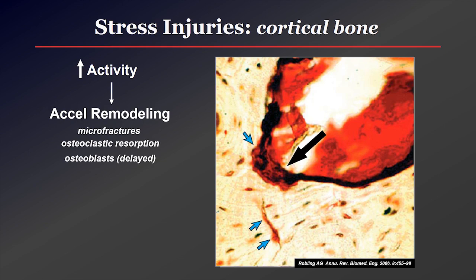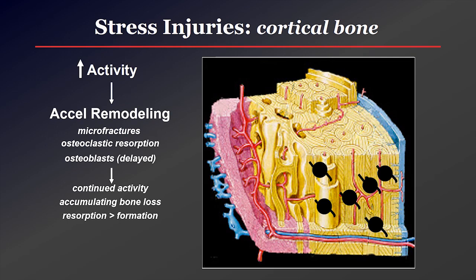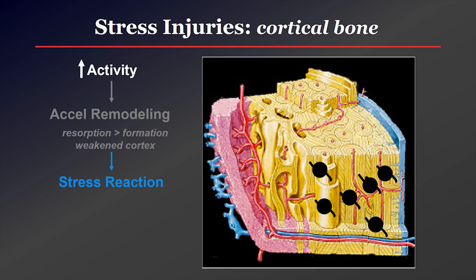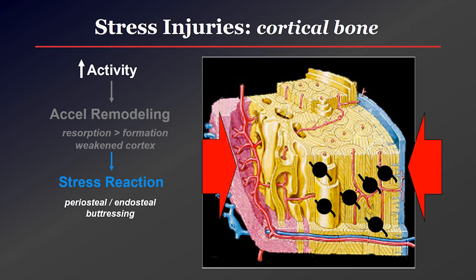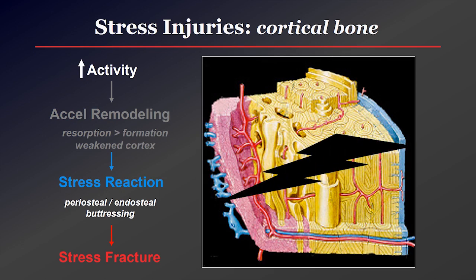Unfortunately, the osteoblasts are delayed by a few weeks, so the cortex may be temporarily weakened. If activity continues, you can have accumulating bone loss and continued osteoclastic resorption, resulting in weakened cortex. This peak bone loss occurs at about three weeks after the beginning of this process. At that point we begin to talk about stress reaction, when osteoclastic resorption has outstripped formation, temporarily weakening the cortex. The bone may start to buttress that area with new bone on the periosteal or endosteal surfaces, and if activity continues, microfractures increase and you can end up with a complete mechanical failure and stress fracture.